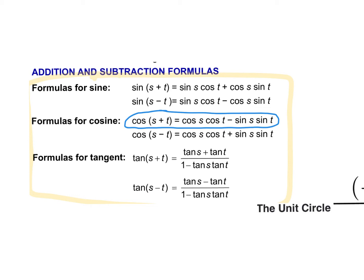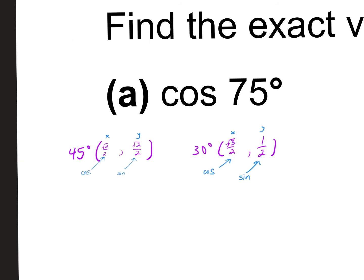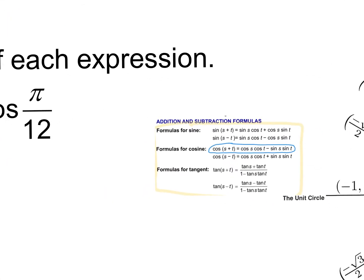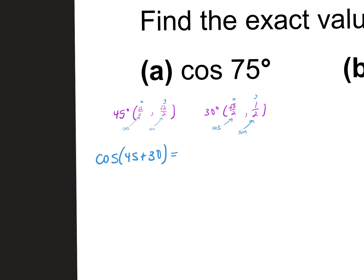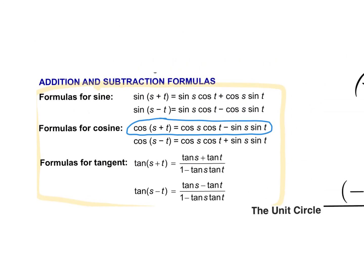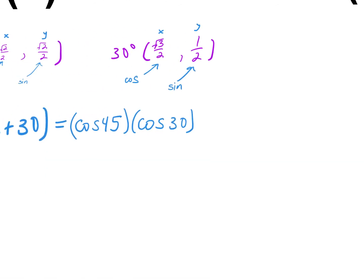Notice what the cosine addition formula is: cosine of one angle times cosine of the other, minus sine times sine. So I write: cosine of 45 plus 30 equals cosine 45 times cosine 30 minus sine 45 times sine 30. Does it matter if I put 45 first? No, because we're adding. If using subtraction, order would matter.